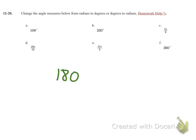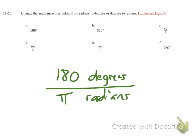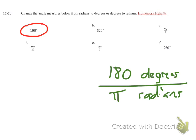And 180 degrees over pi radians actually now is a giant one, because they are equal to each other. So if I look at 108 degrees, that means if I want the degrees to cancel out, I'm going to have 108 degrees, and I'm going to multiply that now by 180 degrees underneath and pi radians in the top. The degrees will cancel out.